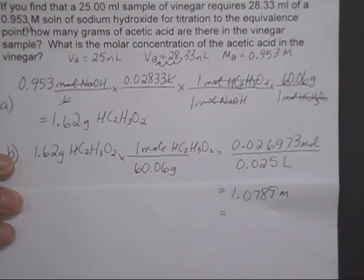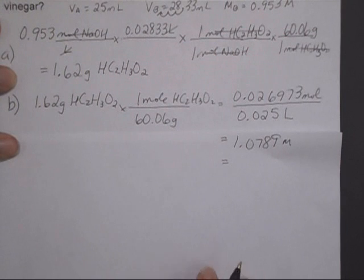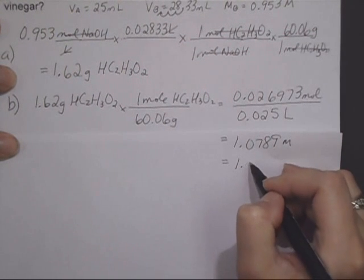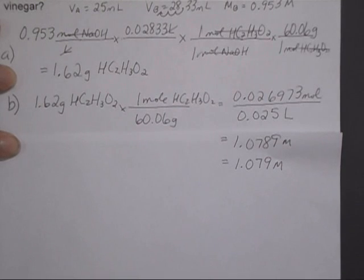And I get 1.0789 molar. And with sig figs, it looks like I've got four sig figs everywhere. So 1.079 molar acetic acid.